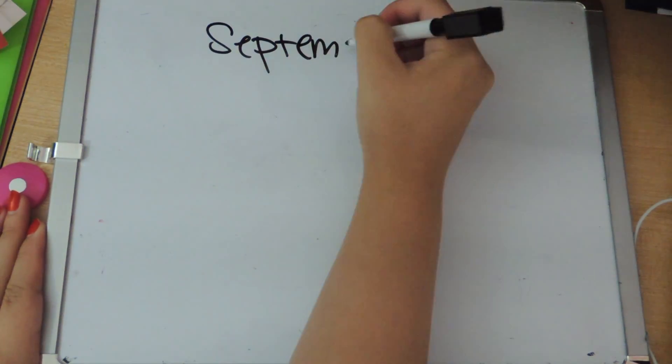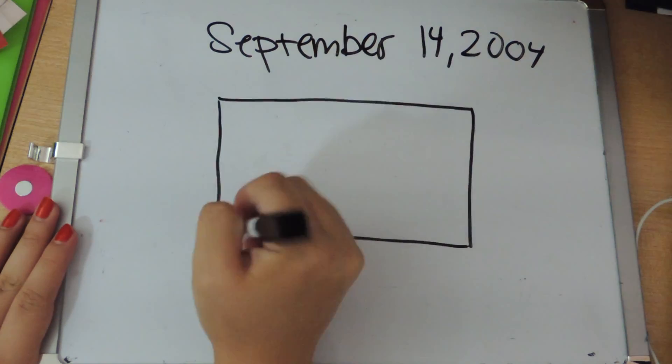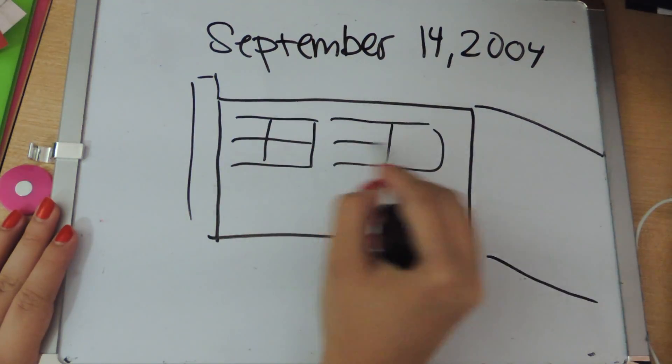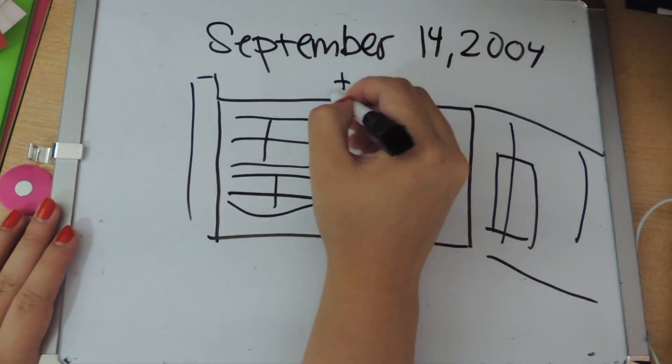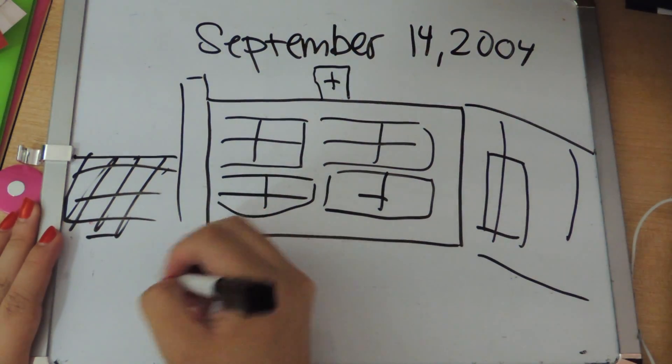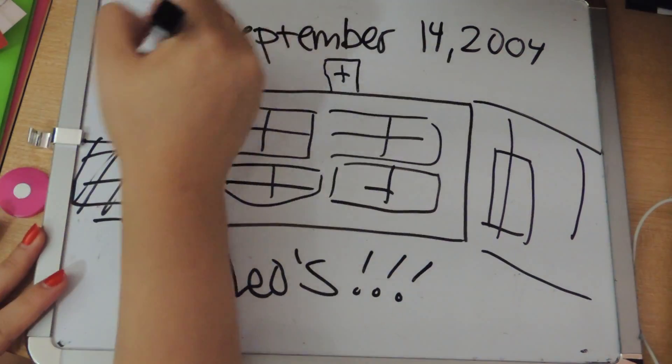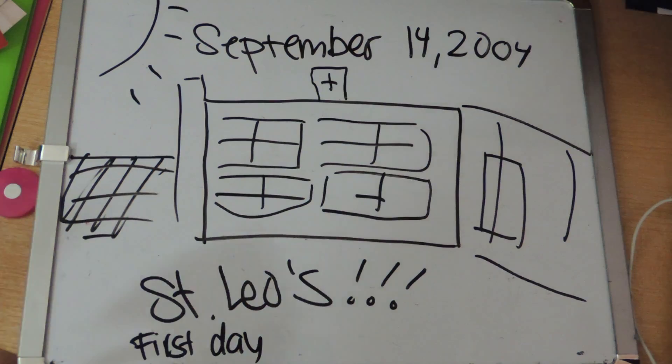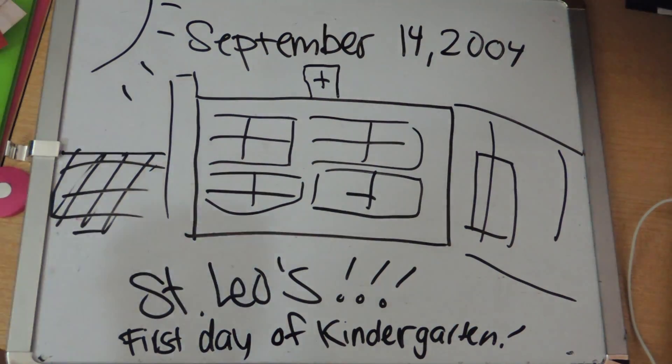This is the story of me and my best friend of 13 years, Amanda. Amanda and I met September 14th, 2004 in a small private elementary school in a small town of Elmwood Park here in New Jersey that nobody knows about.